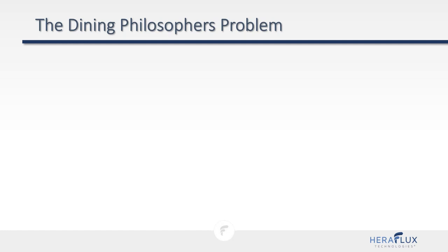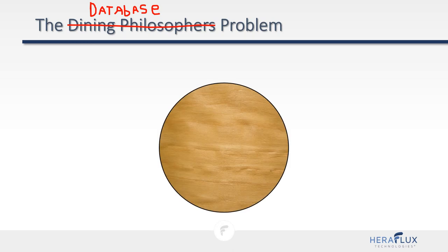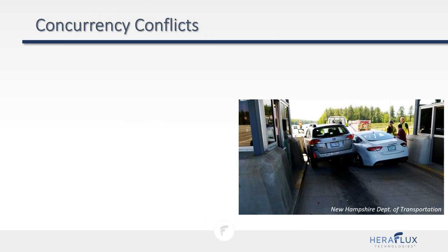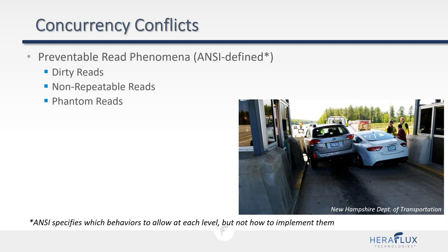This dining philosophers problem applies directly to databases. Instead of philosophers, we have users. Instead of spaghetti, we have data tables. Instead of forks, we have locks. Concurrency conflicts are the major issue. ANSI defines preventable read phenomena: dirty reads, non-repeatable reads, and phantom reads. ANSI specifies which behaviors to allow at each level, but not how to implement the solution — which can vary by database vendor. There are also lost updates and deadlocks.